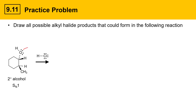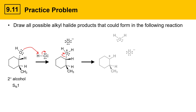The OH group could grab a proton off the HCl, which protonates it and makes it into a good leaving group. Since this is a secondary substrate, that leaving group could leave, giving a carbocation — the other products being water and Cl⁻ as a counterion. That's a secondary carbocation, and chloride can attack it to generate alkyl halide products.